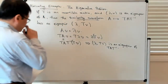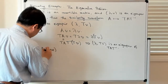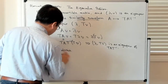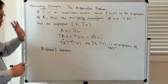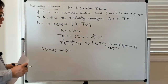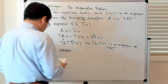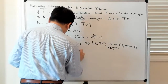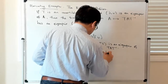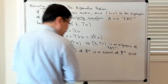So let's talk about linear subspaces. A linear subspace — sometimes 'linear' is omitted and we just say subspace — is understood in the context of vector spaces. A subspace S of F^n is a subset of F^n that is closed under linear combinations.